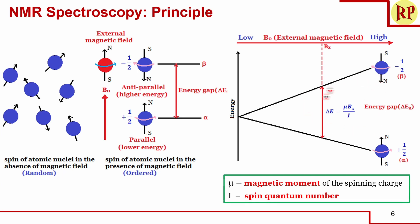The energy gap is governed by an equation where Bx is the magnetic field at that particular position. More magnetic field means more energy gap. When radio waves are allowed to pass through, the parallel spin orientation absorbs the radio waves and undergoes a spin flip — that is, the parallel spin becomes anti-parallel. At this particular frequency, the nuclei are said to be in resonance with the external magnetic field.